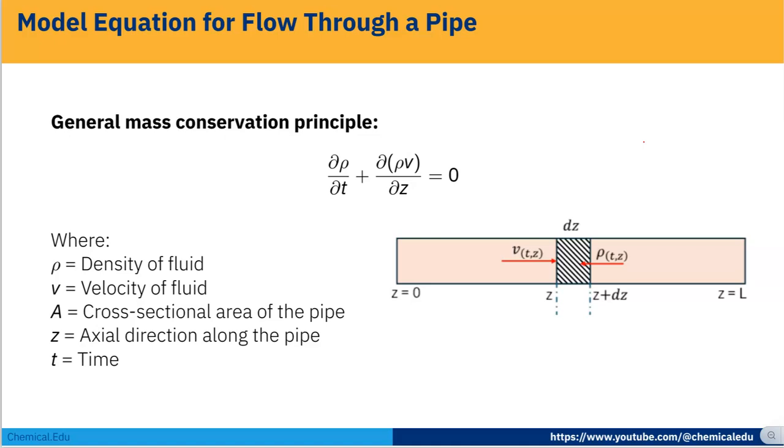Finally, the general mass conservation principle or model equation for flow through a pipe is ∂ρ/∂t + ∂(ρv)/∂z = 0, where ρ is the density of the fluid, v is the velocity, A is the cross sectional area of the pipe, z is the axial direction along the pipe, and t is time. That is the mass conservation principle.